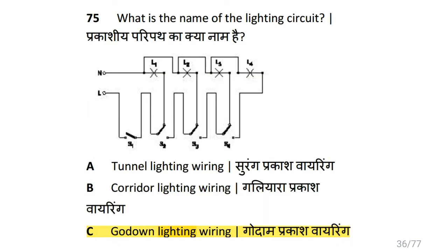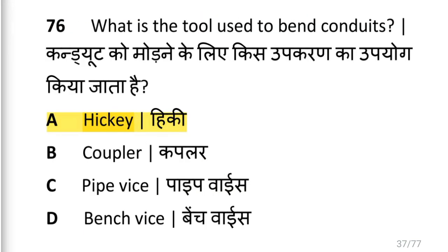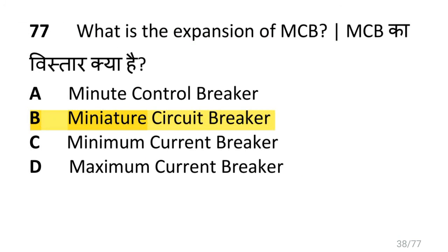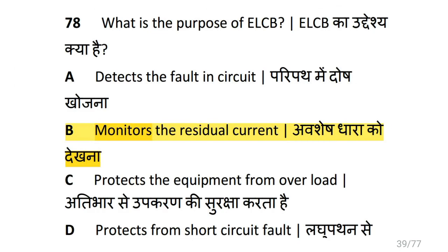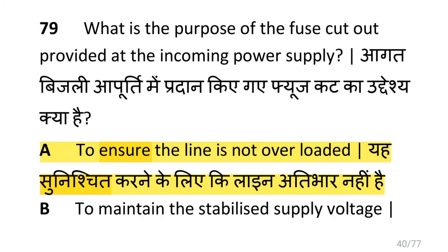What is the name of this lighting circuit? It is a godown lighting circuit or wiring. What is the tool used to bend conduit? That is Hickey tool. What is the expansion of MCB? That is miniature circuit breaker. What is the purpose of ELCB? That is to monitor the residual current. ELCB means electrical leakage circuit breaker.